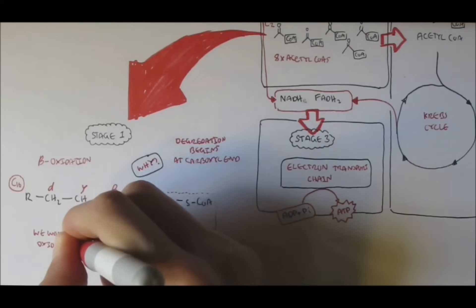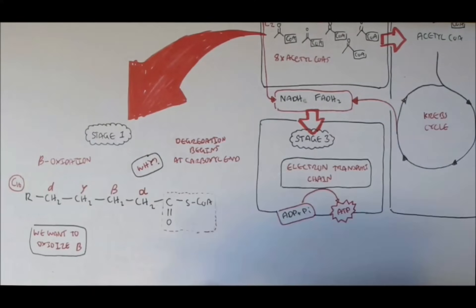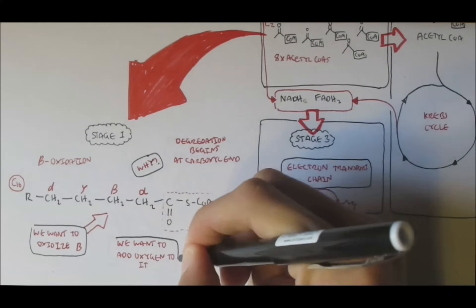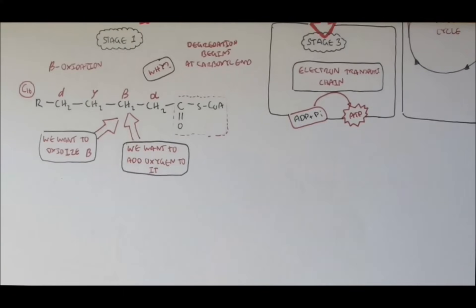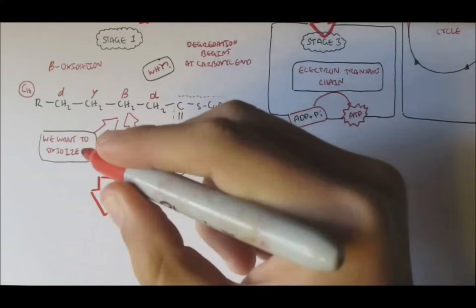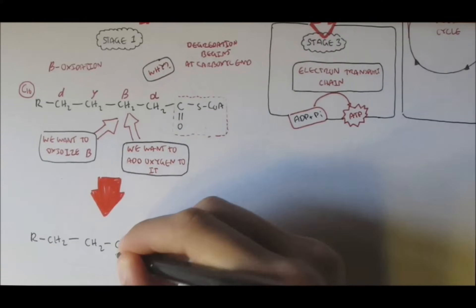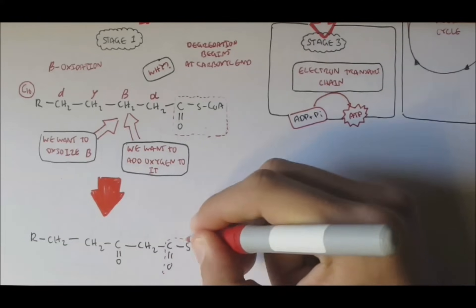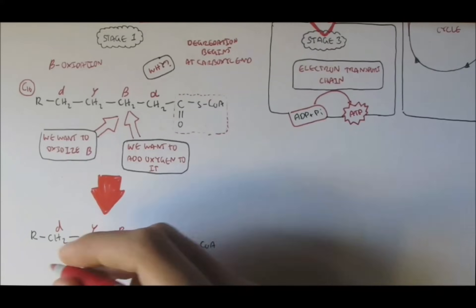In beta-oxidation, we want to oxidize beta. We want to add oxygen to beta-carbon, this beta-carbon here. So, through several reactions, this same palmitoyl-CoA structure will look like this. And here is a carboxyl end still. And what is different is that the beta-carbon is now bonded to oxygen. So it has been oxidized.